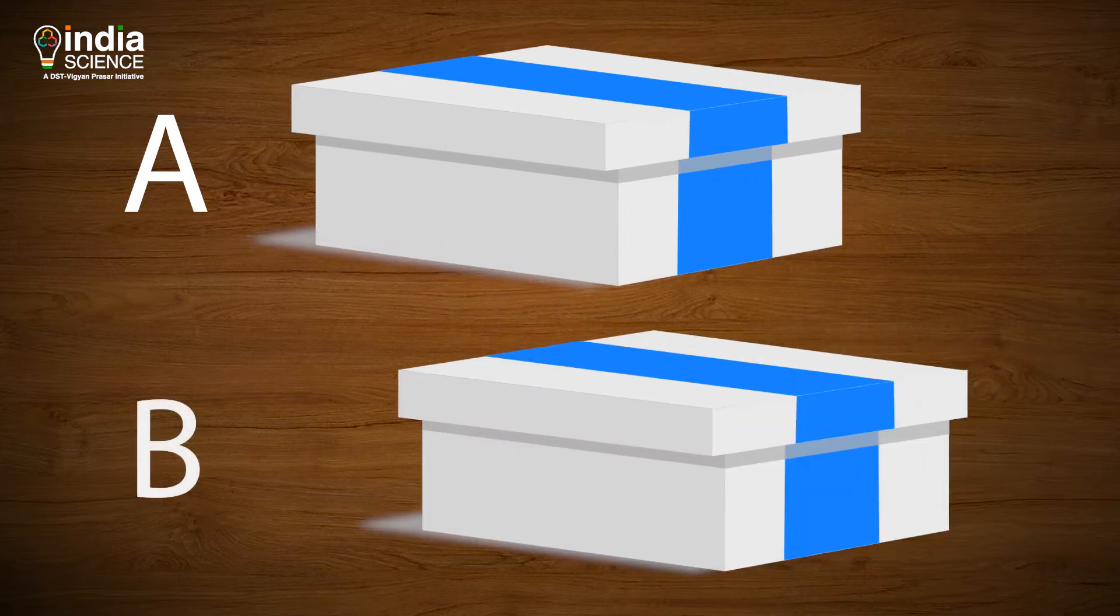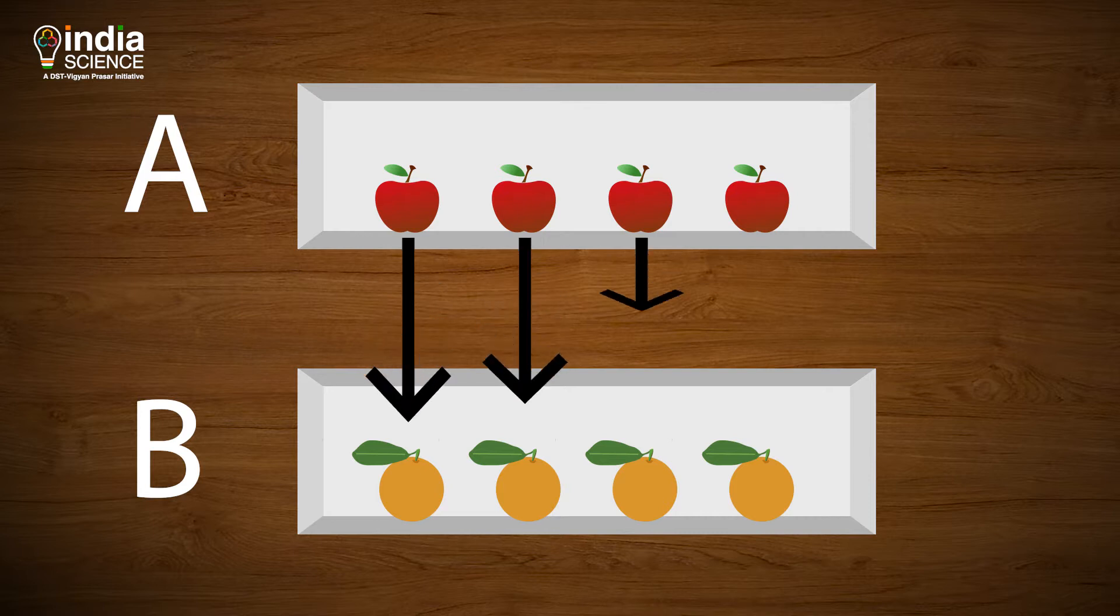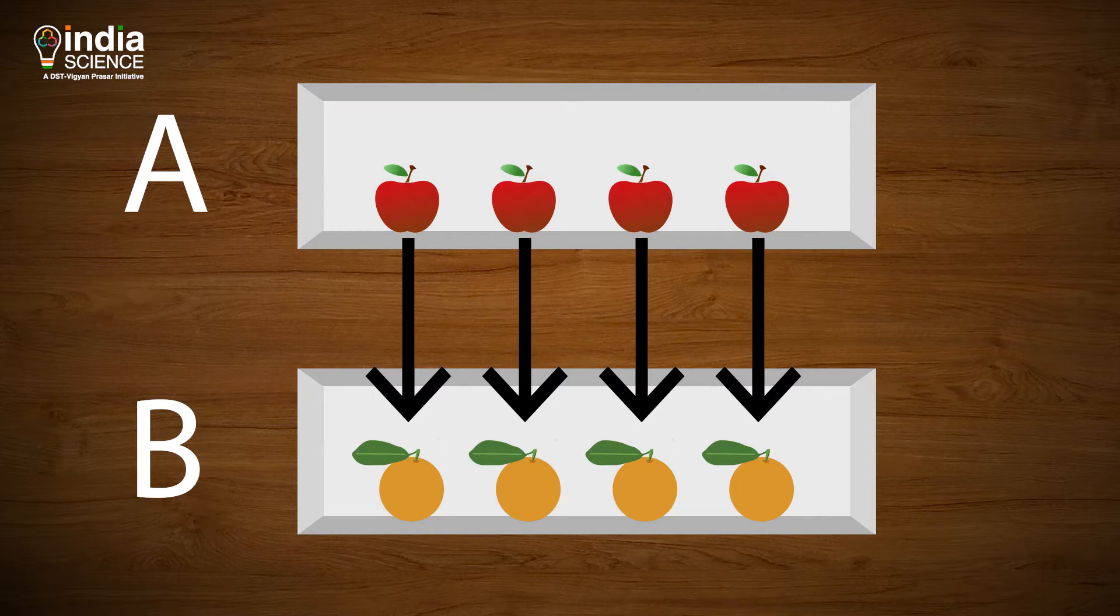For example, if there are four apples in a box A and four oranges in a box B, then we can do the one-to-one correspondence or pairing like this, and say that these two sets are of the same size.